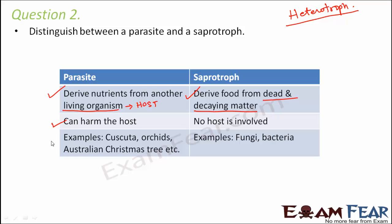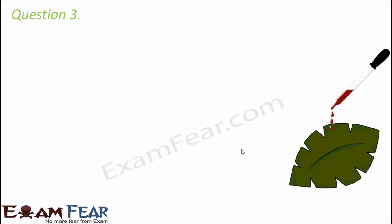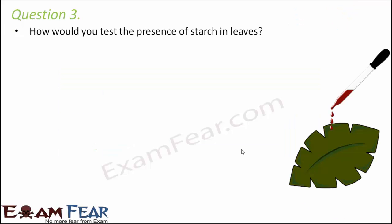Examples of parasites are cuscuta, orchids, and the Australian Christmas tree. Saprotrophs include bacteria and fungi. Question number three: How would you test the presence of starch in leaves?